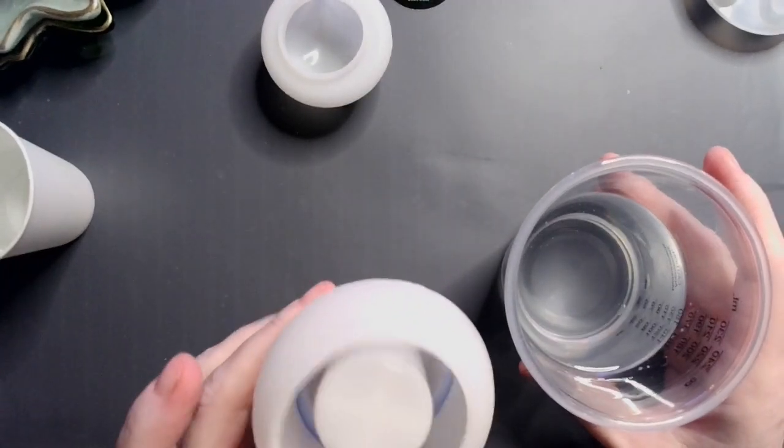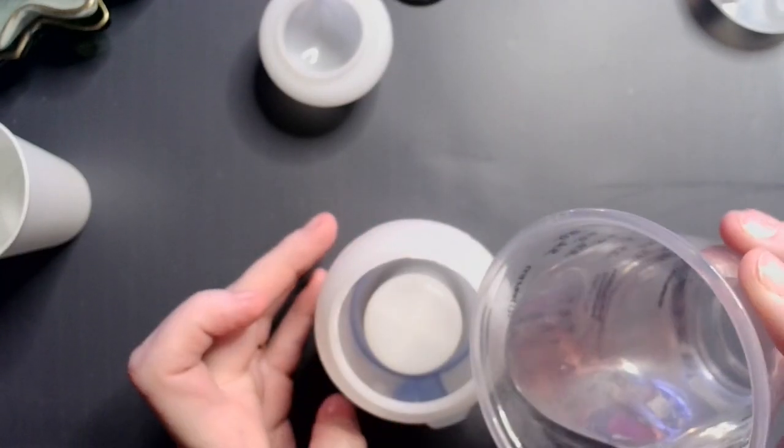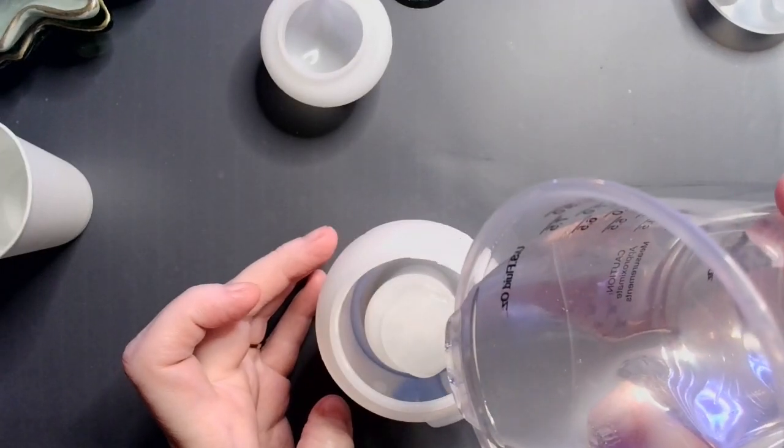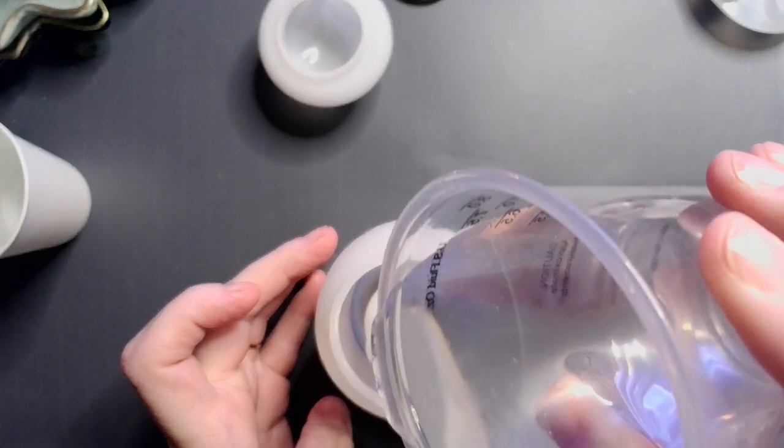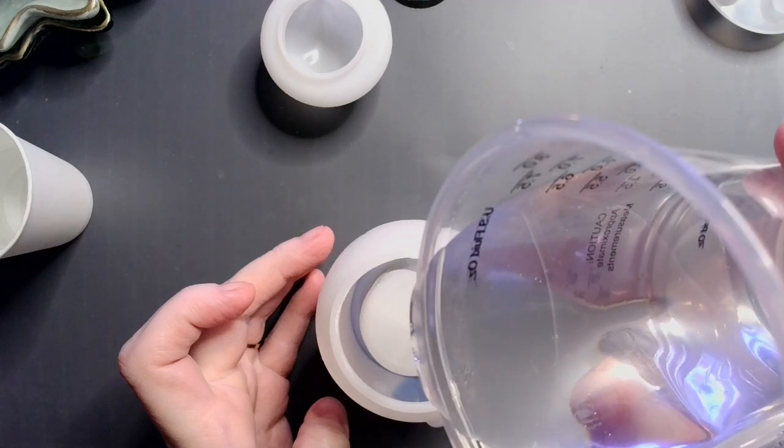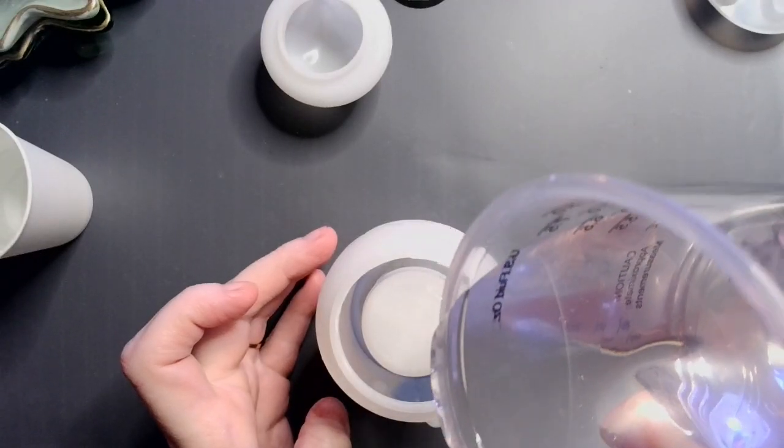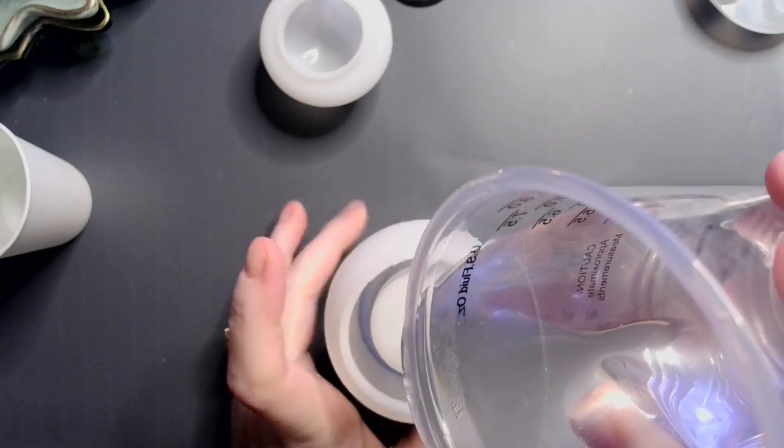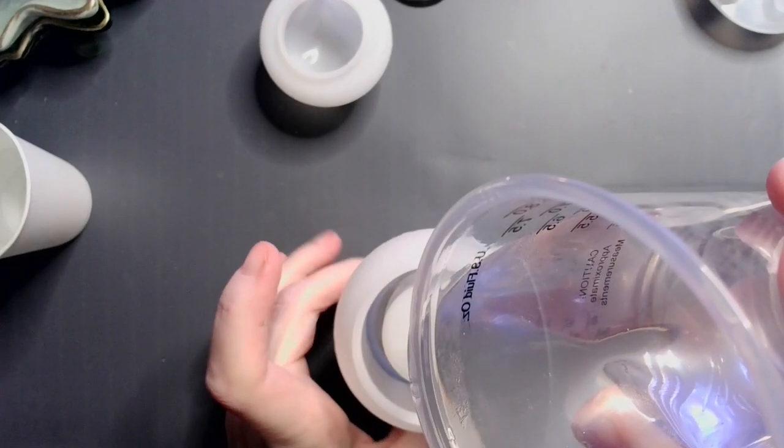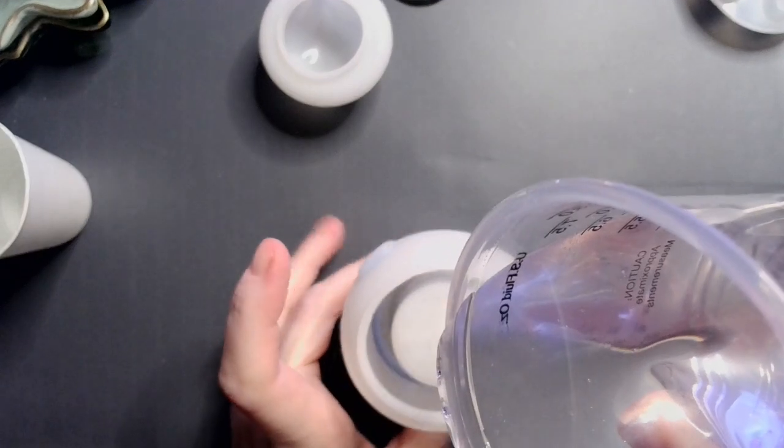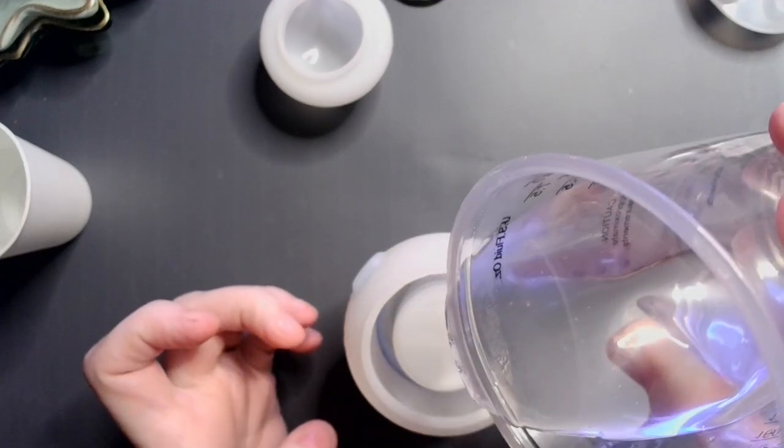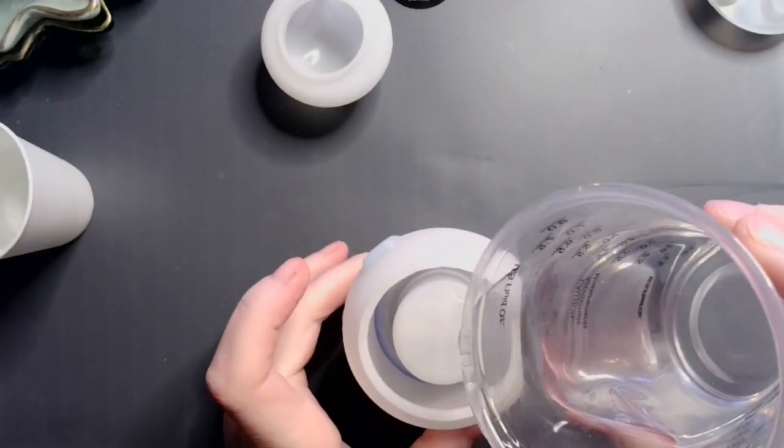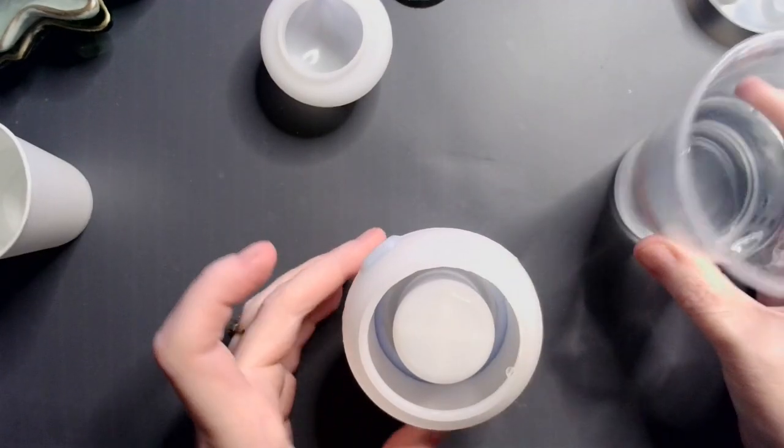So, what I'm going to do is pour in some clear resin. And I'm going to be kind of slow about it, just to make sure that everything goes in properly. And as I'm pouring, I'm going to sort of give his head a bit of a squish, just to make sure that we don't get any bubbles in there. Or the least amount of bubbles as possible.